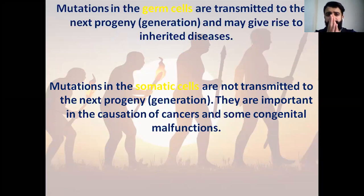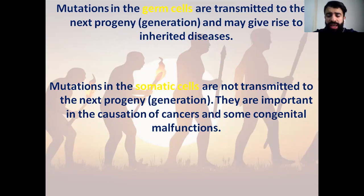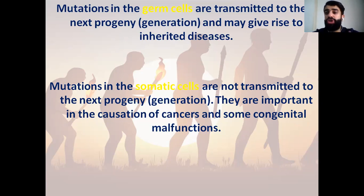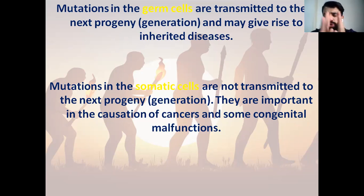We have two types of mutations. Mutations in the germ cells — these mutations are going to be transmitted to the next generation and they may give rise to inherited diseases. Whereas other types of mutations occur in the somatic cells and are not transmitted to the next generation, so they are important in the causing of cancers and some congenital malfunctions.